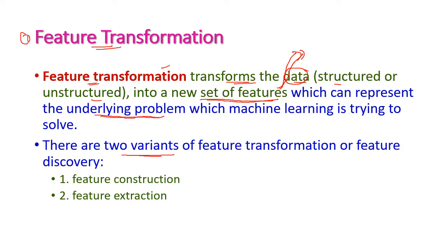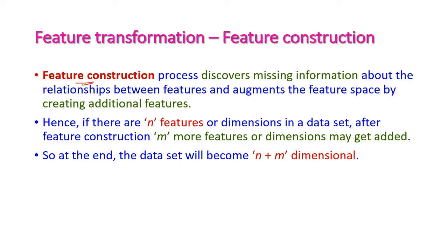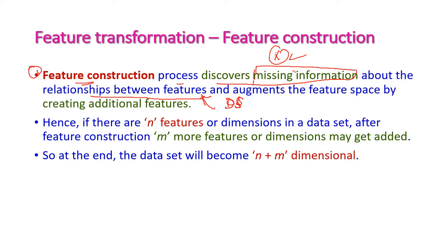Feature construction is the process of discovering the missing information in the dataset. It discovers missing information by understanding the relationship between the existing features in the dataset, and tries to derive that missing information. This is called as feature construction.